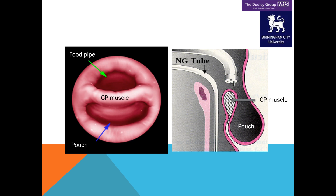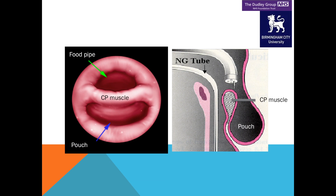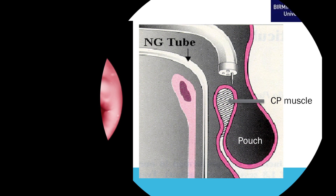To illustrate further, the picture on your left is what we see when we put the telescope down the throat. The green arrow shows the food pipe, which we also call the esophagus, and at the back you see the pouch. In between is that culprit muscle, which shuts the gate into the gullet, so all the food — rather than going into the esophagus — traps into the pouch. The cartoon on the right shows the pouch, the esophagus, and the cricopharyngeus muscle acting as a partition between the pouch and the food pipe.